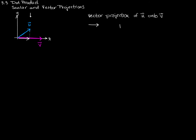We'll use the notation PROJ, which is short for projection, with u next to it as the argument, and a subscript down here that shows the vector we're projecting onto. We can find this vector by doing the following computation.